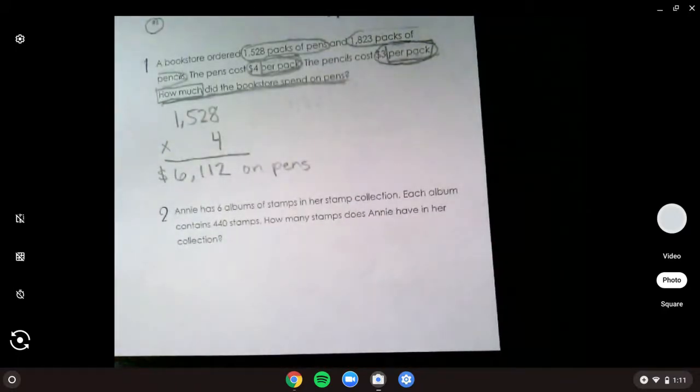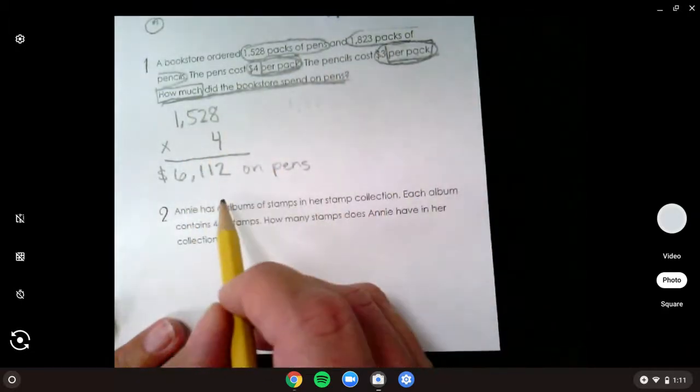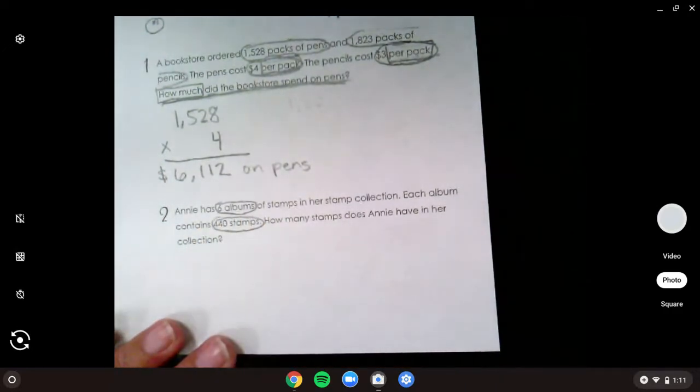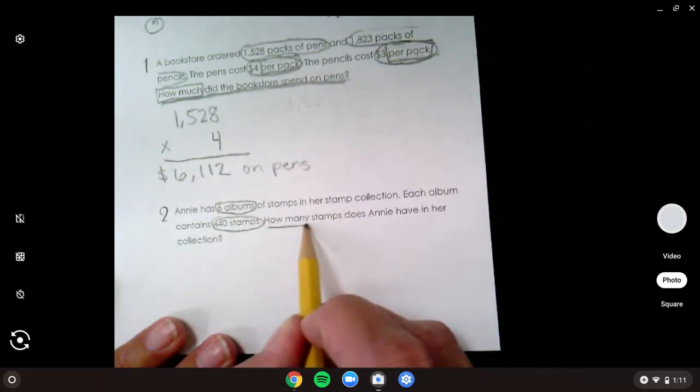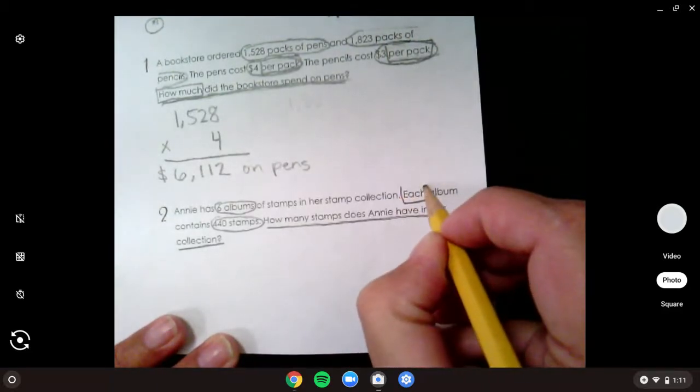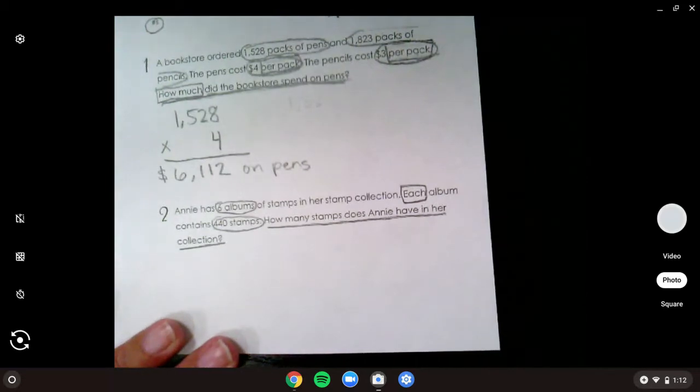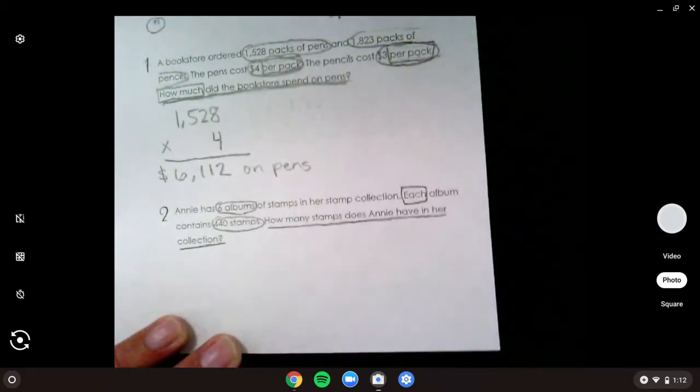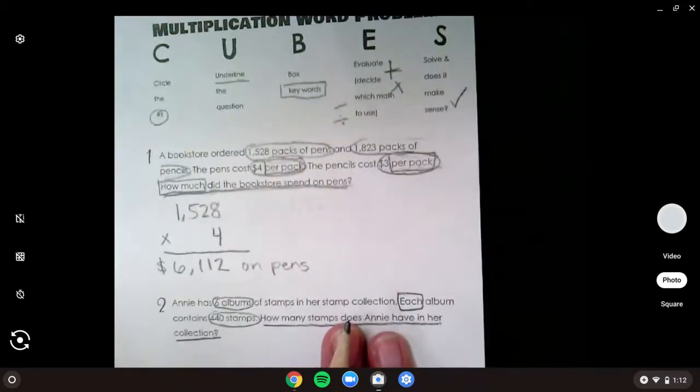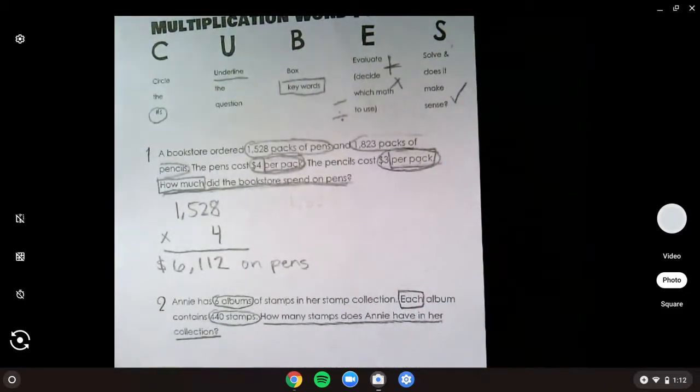And the last one, Annie had six albums of stamps, so we needed to circle that six albums. And we knew each album contains 440 stamps. Only two numbers this time. Our question though was how many stamps does Annie have in her collection? What keywords do you see? Holly? There's each. Each is one. Each album. So that tells us to multiply, right? What are we going to do? We already evaluated. Now we need to, oh you can't see that, can you? I need to solve. How are we going to solve this problem?